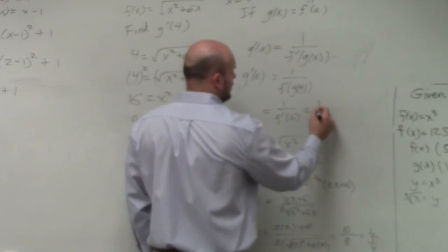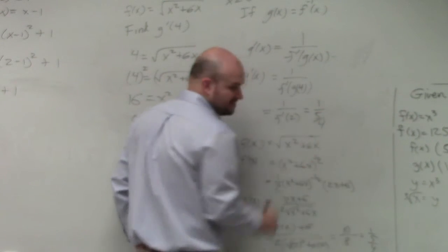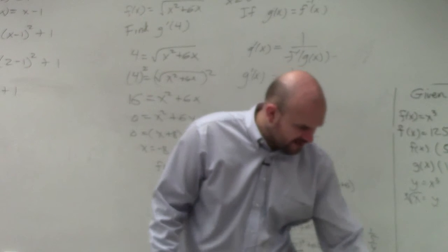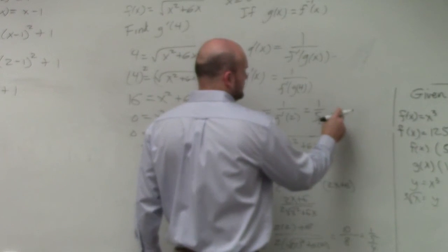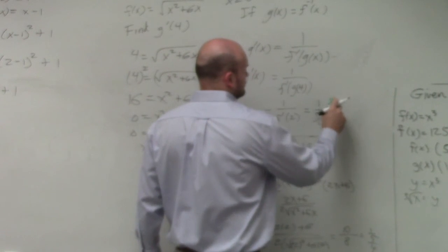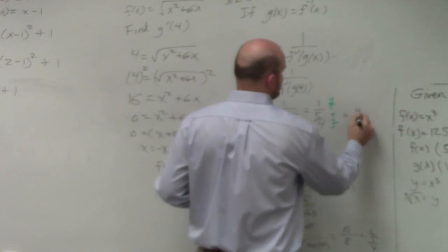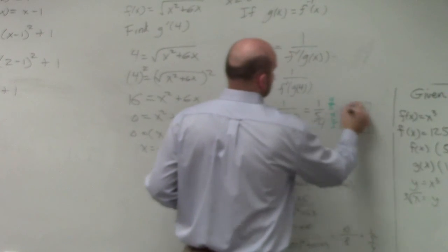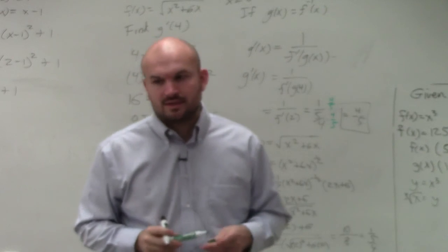So therefore, I have 1 over 5 fourths. I don't want to write a fraction over a fraction. So I'll just multiply by the reciprocal. And my final answer is 4 fifths. Ta-da!